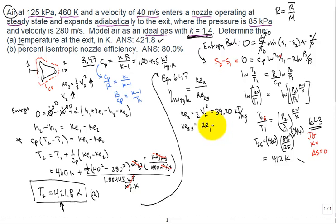Either plus or minus—let's put minus—c sub p times T2s minus T1.